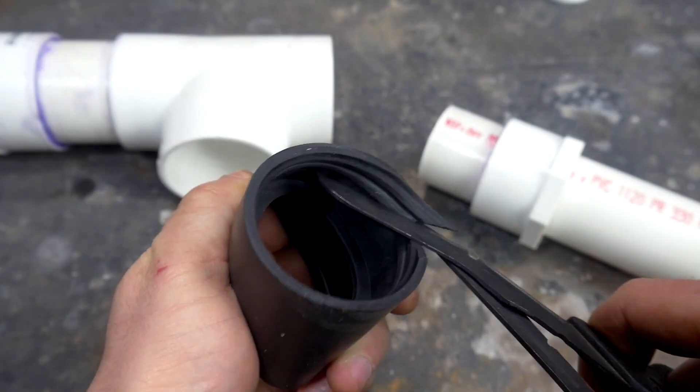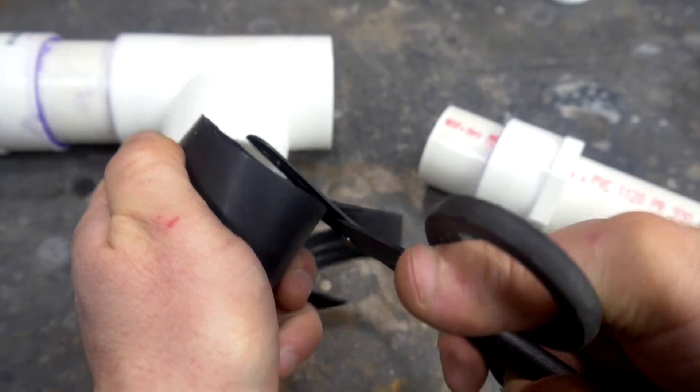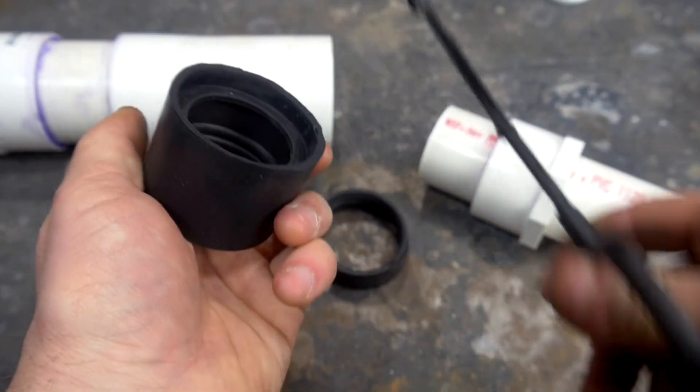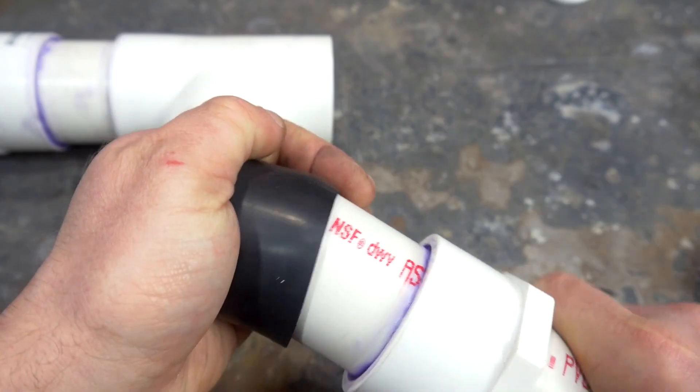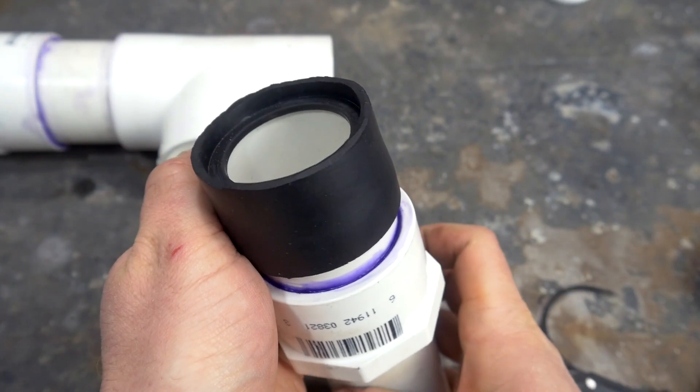The rubber coupling was then trimmed down almost all the way to the center divider, but still leaving a short lip all the way around. This will help it make a seal. This fits over my 1.5-inch pipe, and my piston will now be able to seal perfectly against it.